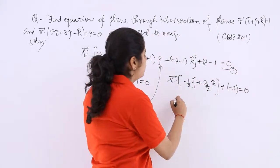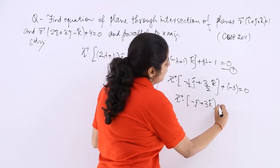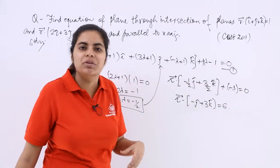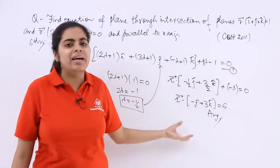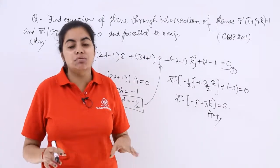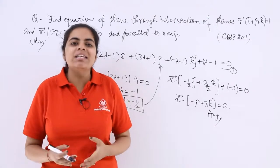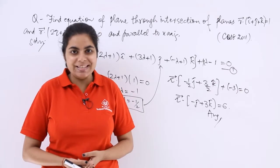Now just take the LCM, so r vector dot (minus j cap plus 3 k cap) equals 6, because minus 6 goes to the other side making it plus 6. This is the answer. This is very important to understand; you cannot afford to make a mistake of this sort. Please revise all the concepts, and then only can miscellaneous problems be solved with ease.